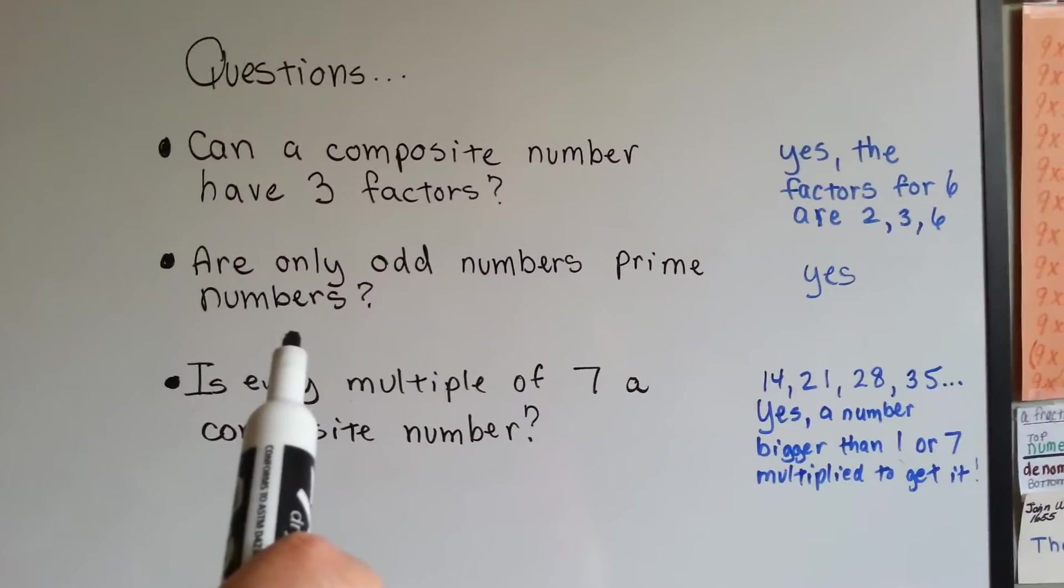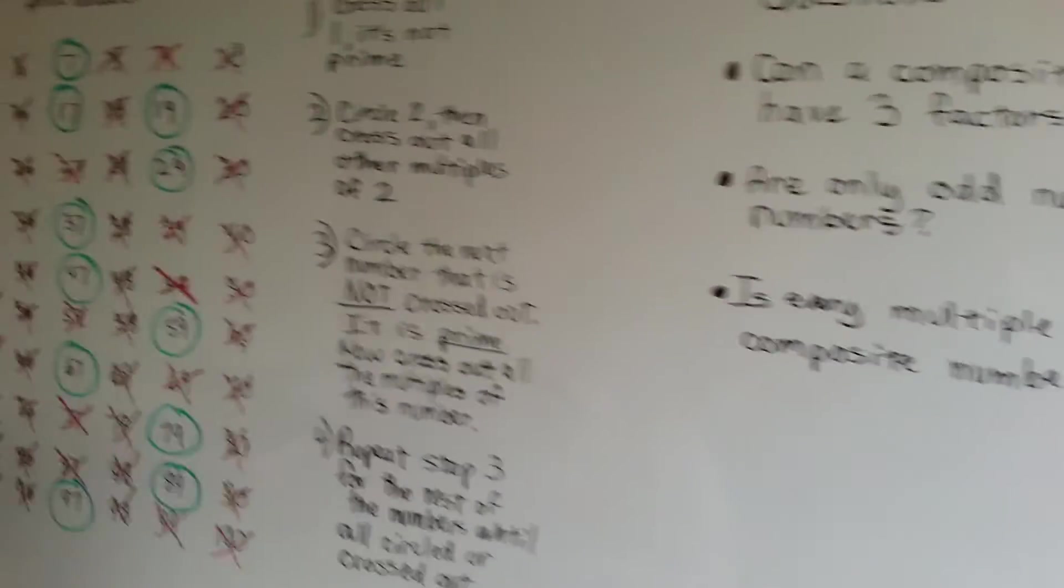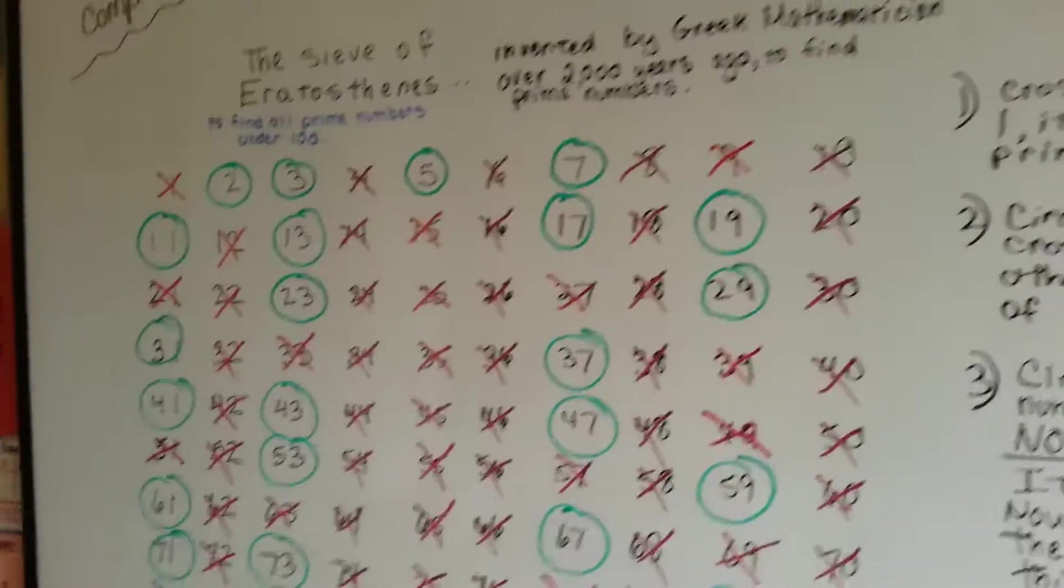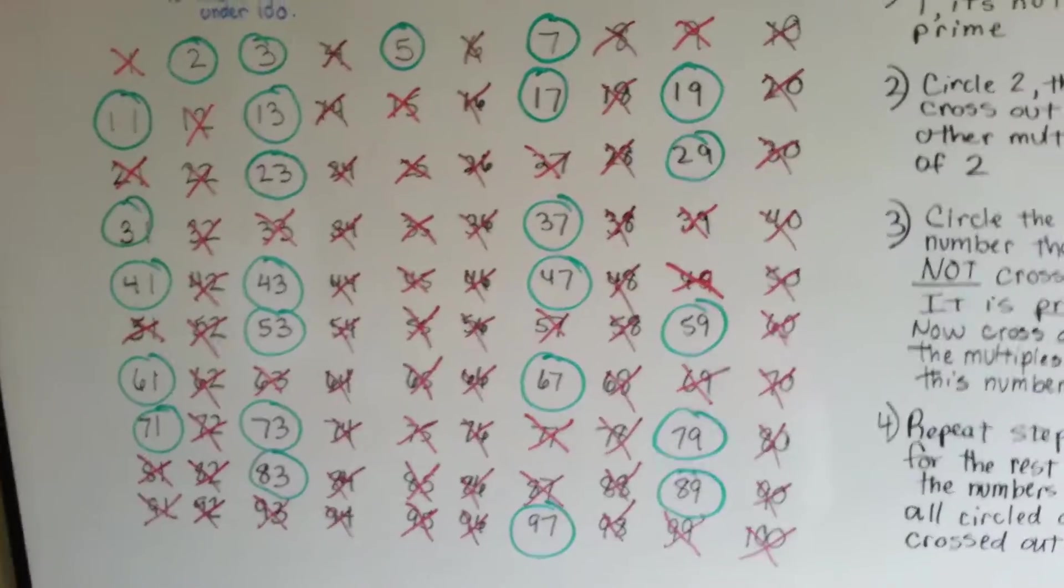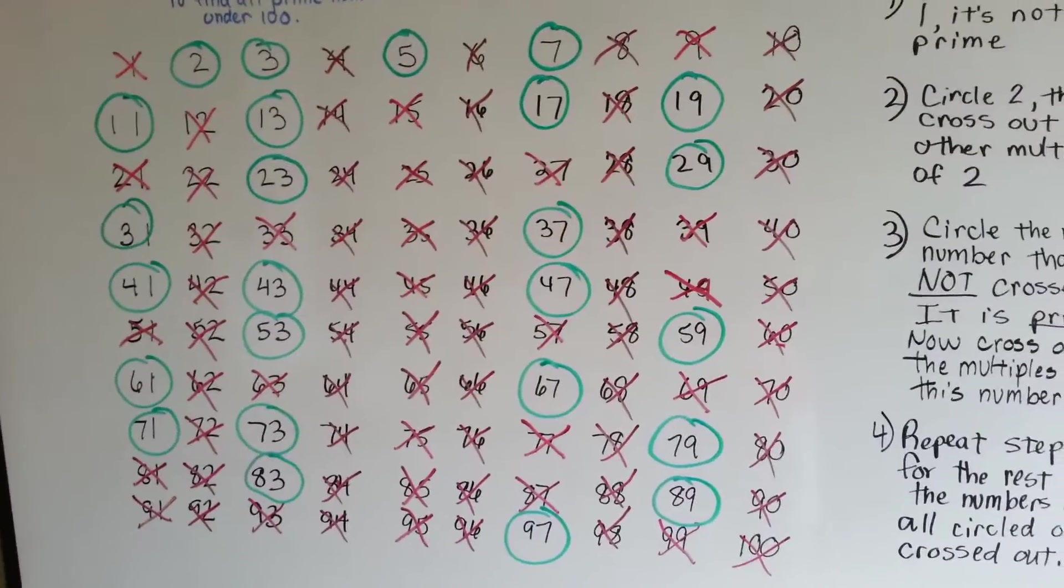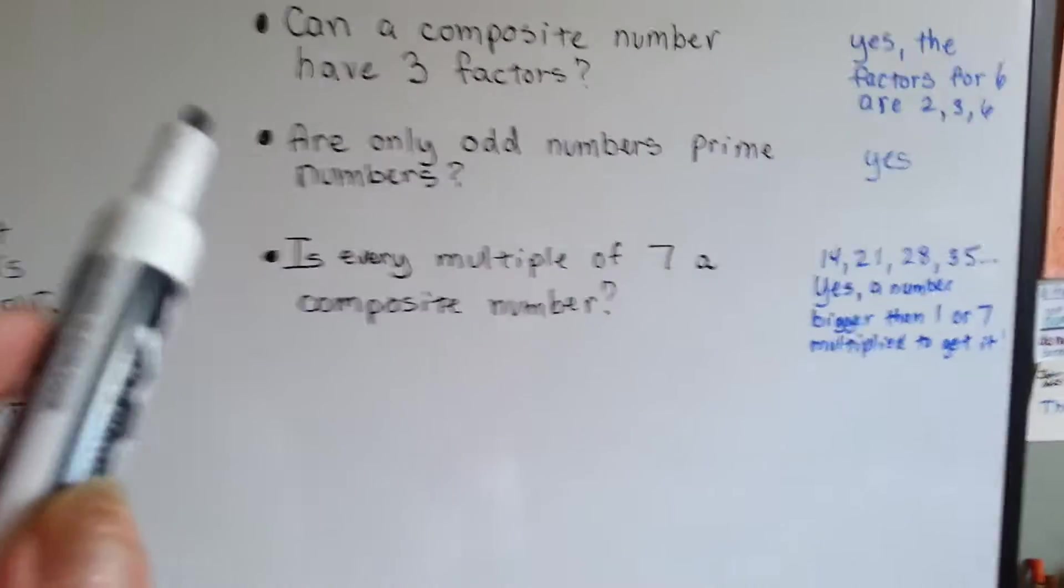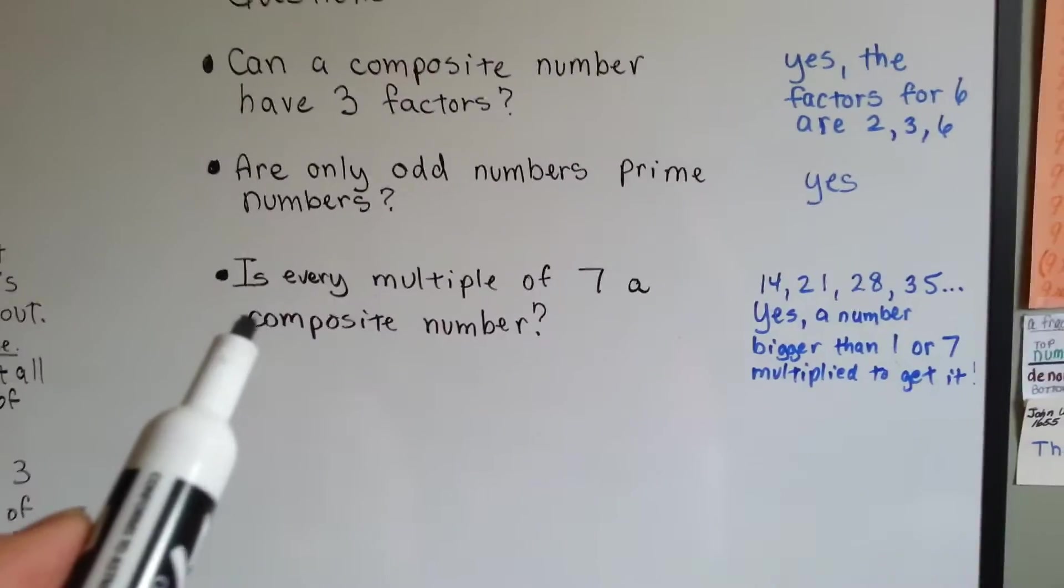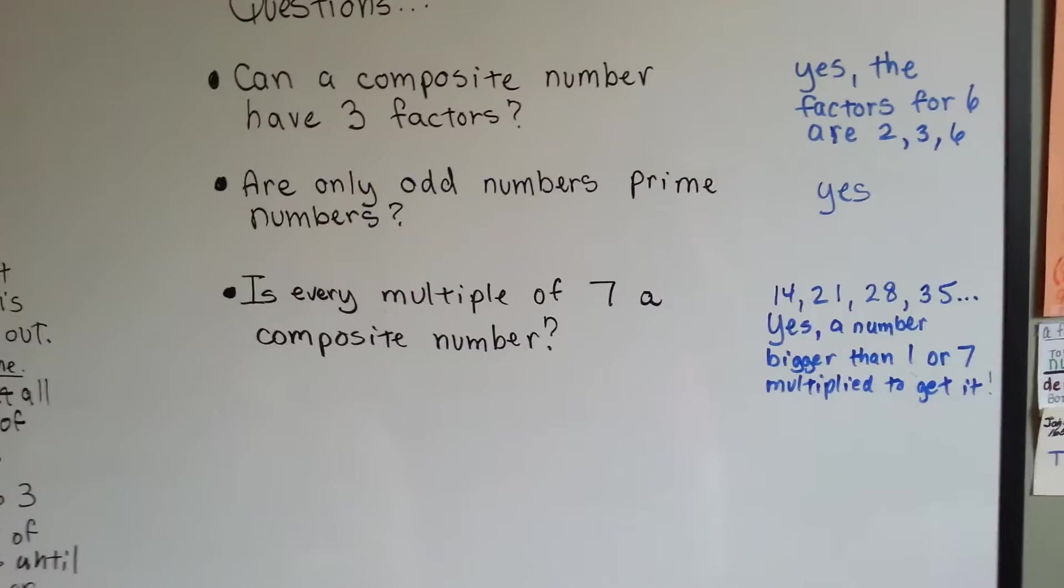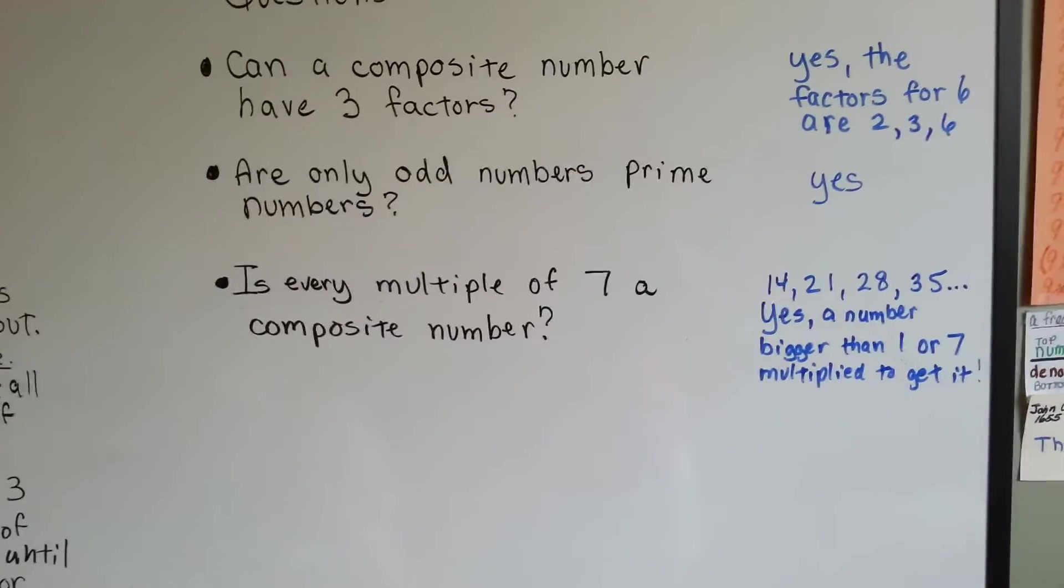Are only odd numbers prime numbers? Let's look. Are all these numbers odd numbers, all the green circled ones? Do you see any even numbers in there at all? No, they're all odd numbers. You know why? Because if they were even numbers, then they would be able to be divided by 2, and that would immediately make it a composite number, because 2 is bigger than 1.